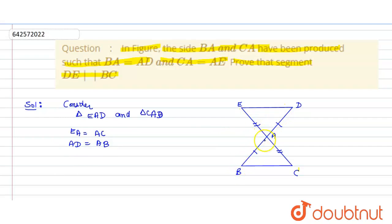And angle EAD will be equal to angle BAC because of vertically opposite angles. That is, angle EAD will be equal to angle BAC.